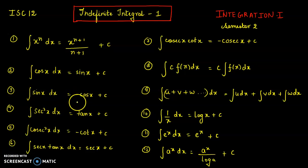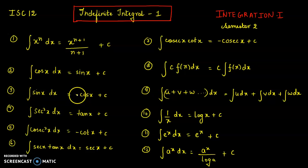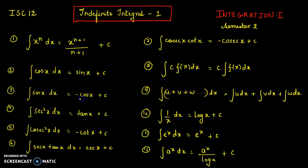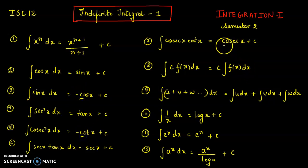Remember that whenever we get this anti-derivative with c, the sign will be negative. You have to remember it this way: c applies here for cos x, and c applies here for cot x and cos x.